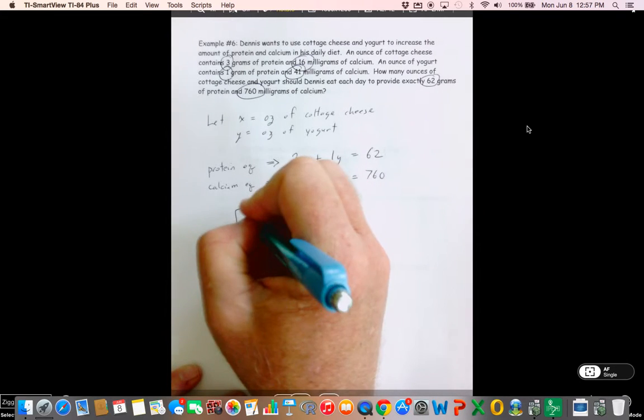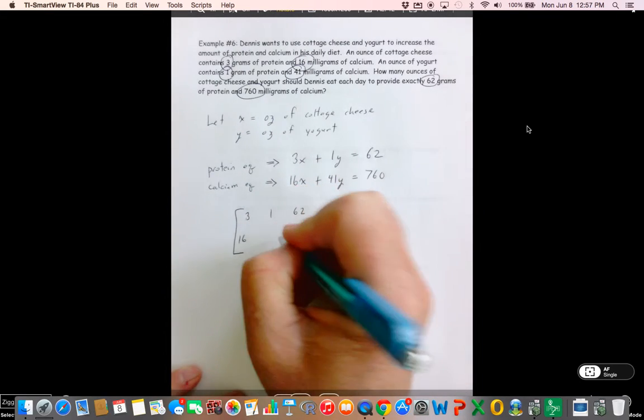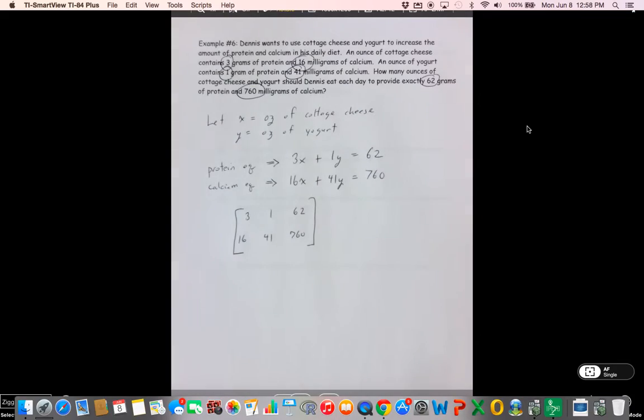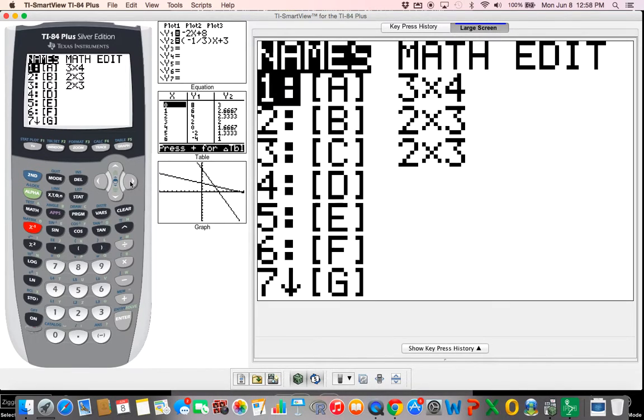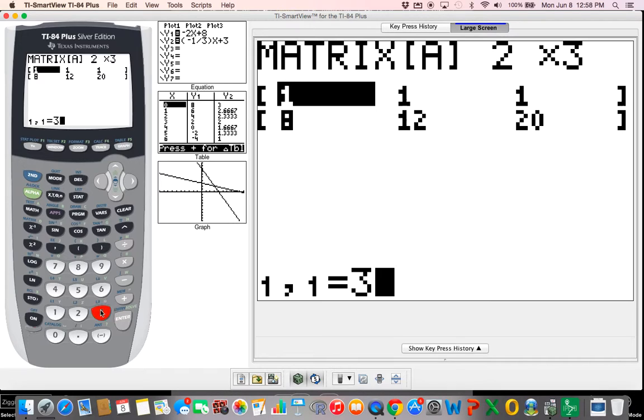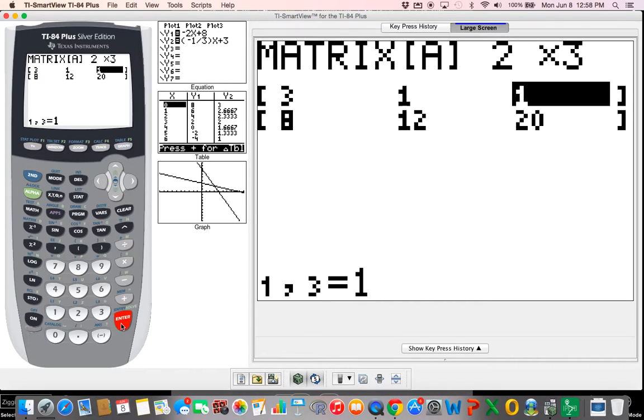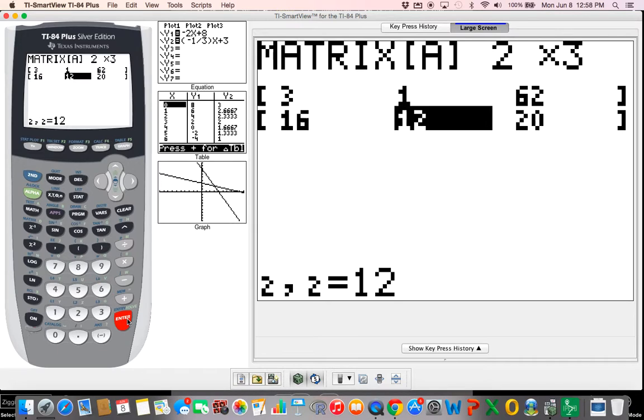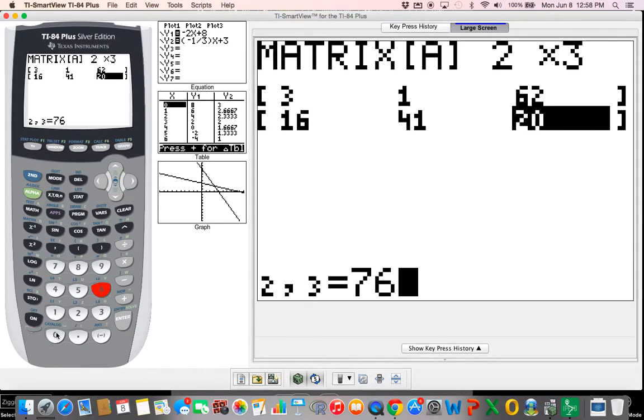Augmented matrix. Grab your calculator. Gang, what size do we need here? We need a 2 by 3. 3, 1. If I'm going too fast for you, pause me. Take still shots. Just don't indict me on anything.